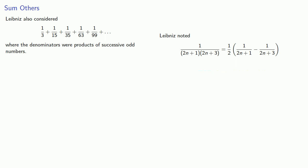And so that means 1 third is 1 half times 1 over 1 minus 1 over 3, 1 fifteenth is half of 1 third minus 1 fifth, 1 thirty-fifth is half of 1 fifth minus 1 seventh, and so on.